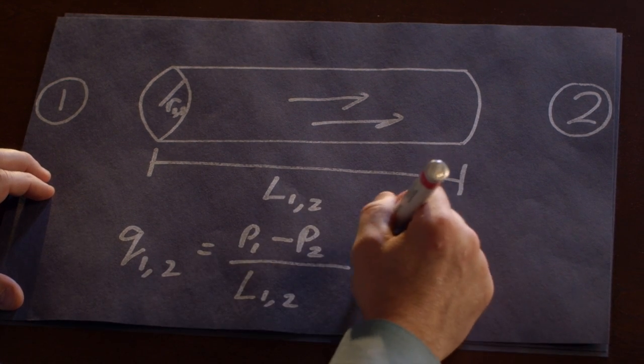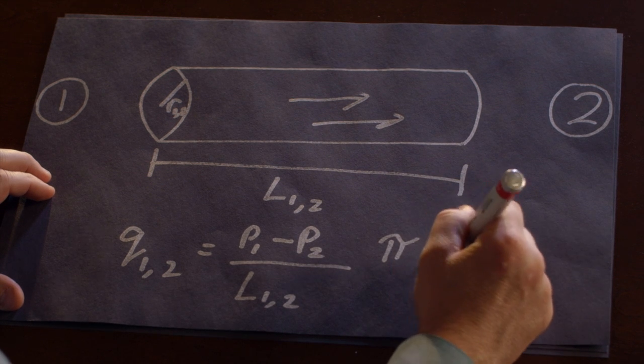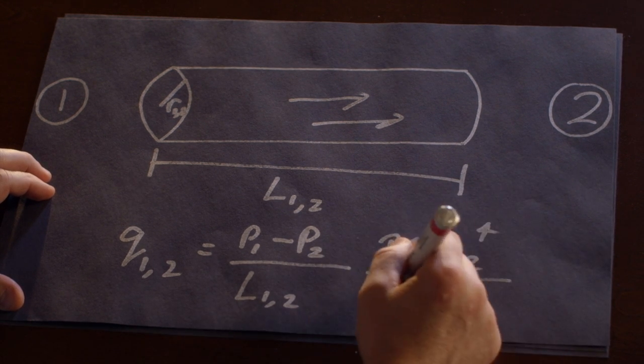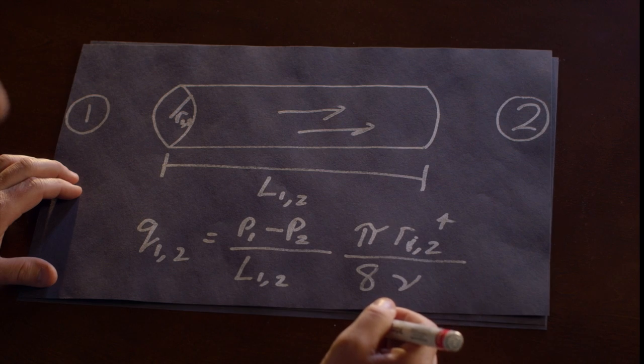And then, because we're mathematicians, we have to have pi. It depends upon the fourth power of the radius divided by eight and divided by the fluid viscosity nu. It's also important to note that q has a sign to it. So if the pressure is higher at one than two, then the flow rate is positive. Otherwise it's negative.